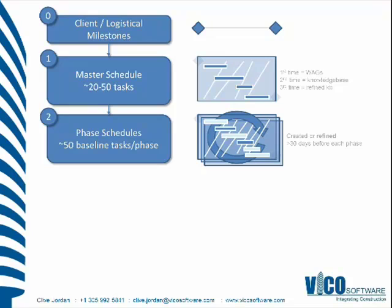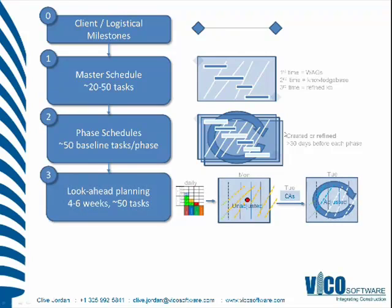We then look at phase scheduling, where each master schedule task can be broken down into a phase schedule for refinement — typically 30 days before each phase. This is where the look-ahead meeting comes in. In phase scheduling sessions, we try to get the people carrying out the work to commit to the production rates defined in the master schedule phase.